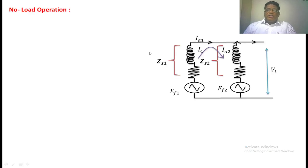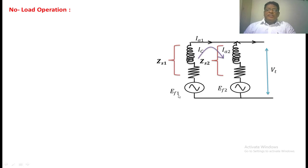Let's take two generators which are operating in parallel. This is the terminal voltage, this is the armature resistance, and this is the synchronous reactance. The total impedance is the synchronous impedance of the first generator, and similarly for the second generator. The current supplied by the first generator is Ia1, the current supplied by the second generator is Ia2, the terminal voltage is VT, EF1 is the excitation voltage of the first generator, and EF2 is the excitation voltage of the second generator.